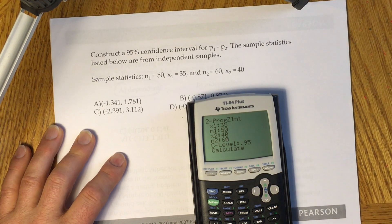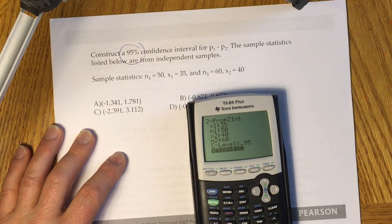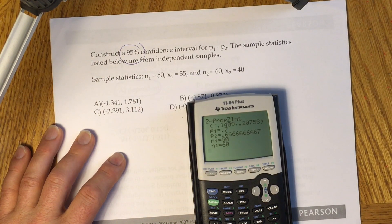Enter 0.95 as the confidence level because you have 95% in the problem condition. Highlight calculate and click enter.